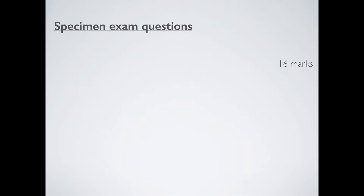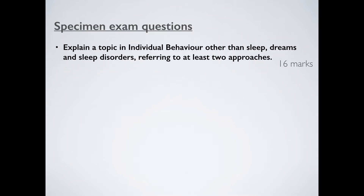Let's look at a slightly longer question — a 16-marker. This would be an absolute beast to write in the exam — we're talking a couple of pages, maybe three or four. The question would be: 'Explain a topic in individual behaviour other than sleep, dreams and sleep disorders, referring to at least two approaches.' Key into that word: explain. Explain means basically everything you know — impress me, tell me everything you can remember about one approach, then another, and if you've got time, fire a third in there as well. Cover all your bases.